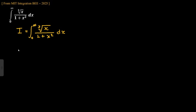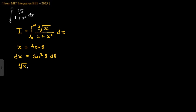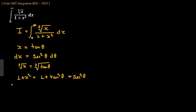We let x = tan θ, so dx = sec² θ dθ. The cube root term becomes cube root of tan θ, and the denominator 1 + x² transforms as 1 + tan² θ = sec² θ.